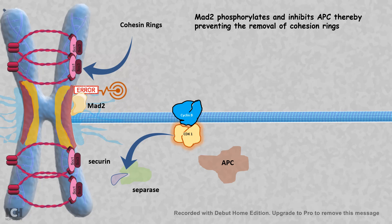MAD2 is a kinase and it inhibits the MPF and the APC. As a result, MPF and APC cannot activate separase, and it cannot break down the cohesin rings. The chromatids stay attached to each other.